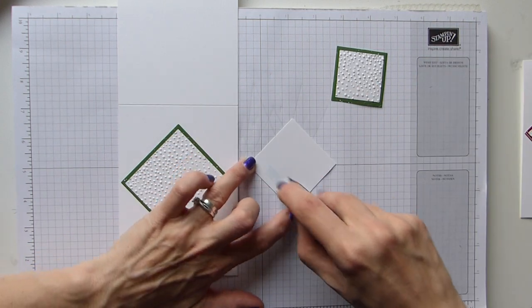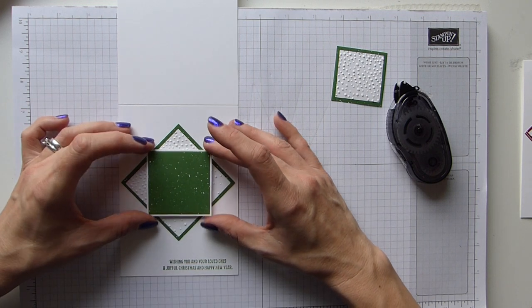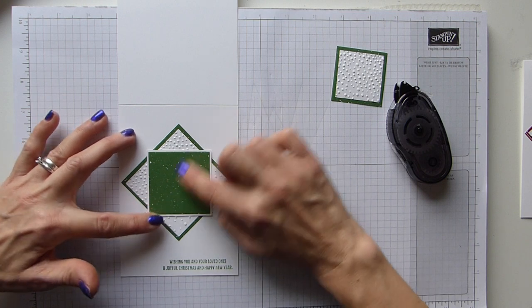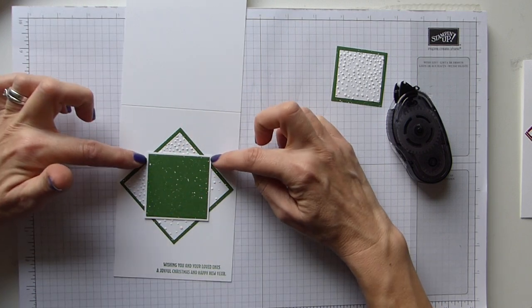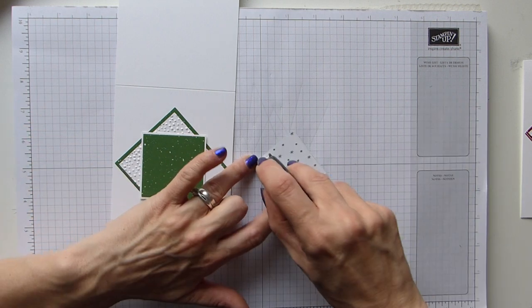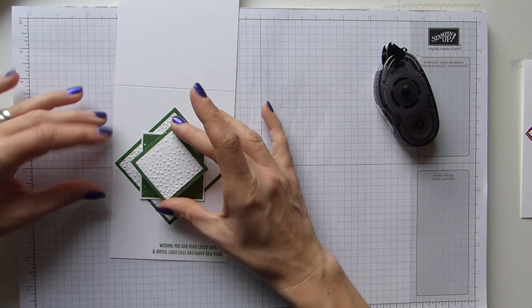The next one is the DSP on white, and this goes on normal, a normal square. So again, just sticking that on. And again, I measured this by the corners here. And then the final one, which is the smallest one, goes on at an angle again.